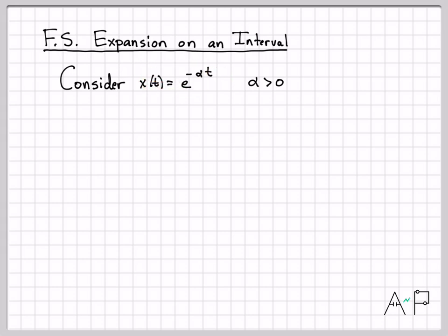Here is the signal x(t) that we'll be working with. It's this decaying exponential. Alpha is a real valued number greater than zero. So as time gets large, this is decaying to zero. As time goes to minus infinity, this is blowing up and getting large. That is e to the minus alpha t.